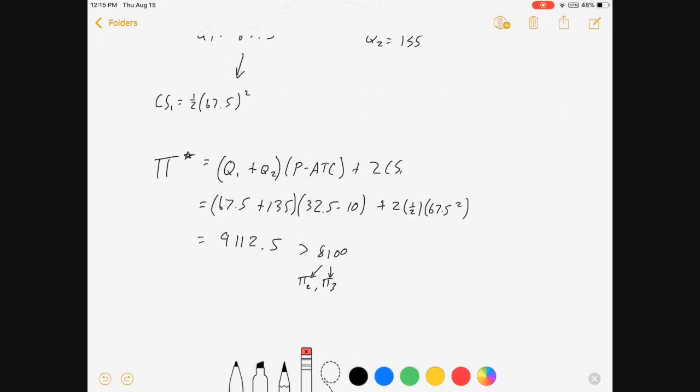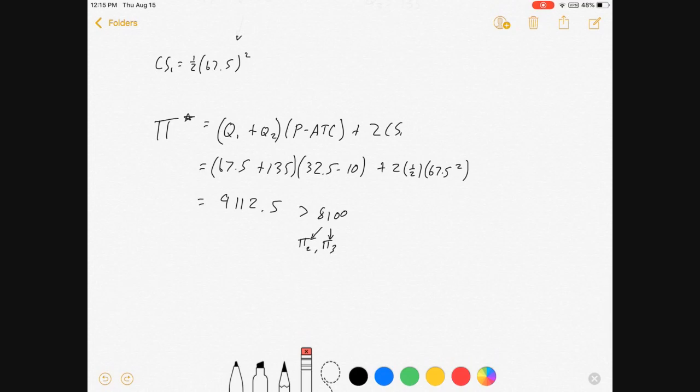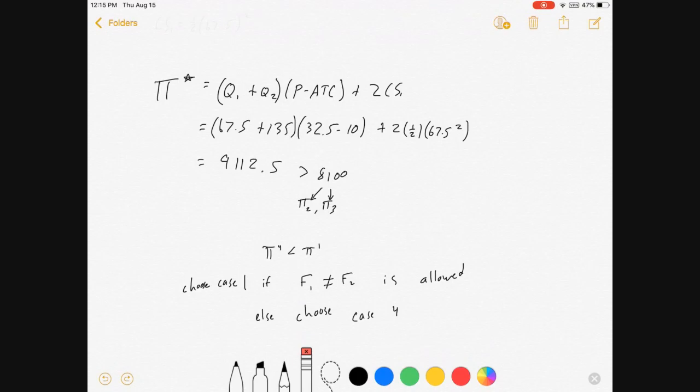You'll also notice that this is less than case 1. Obviously, if we could charge different fees to the different consumers, that's what you should do if you're allowed to charge different fees. Then this gets very simple. If you're not, though, choose case 4, which is setting this up as a function of price, choosing the optimal price, and then setting your fee equal to the lower consumer surplus at that price.